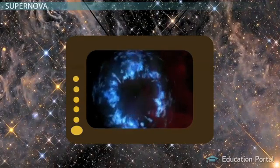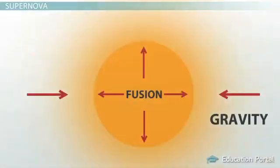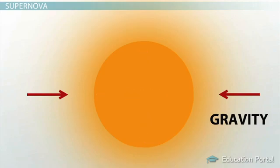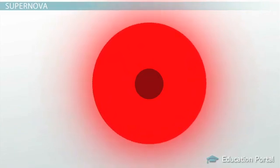A supernova is an explosion that occurs when the star runs out of fuel and fusion stops. Without the outward pressure from the fusion in the core, there is nothing to counteract the inward pressure of gravity. What happens first is that the outside of the star swells into a red supergiant.